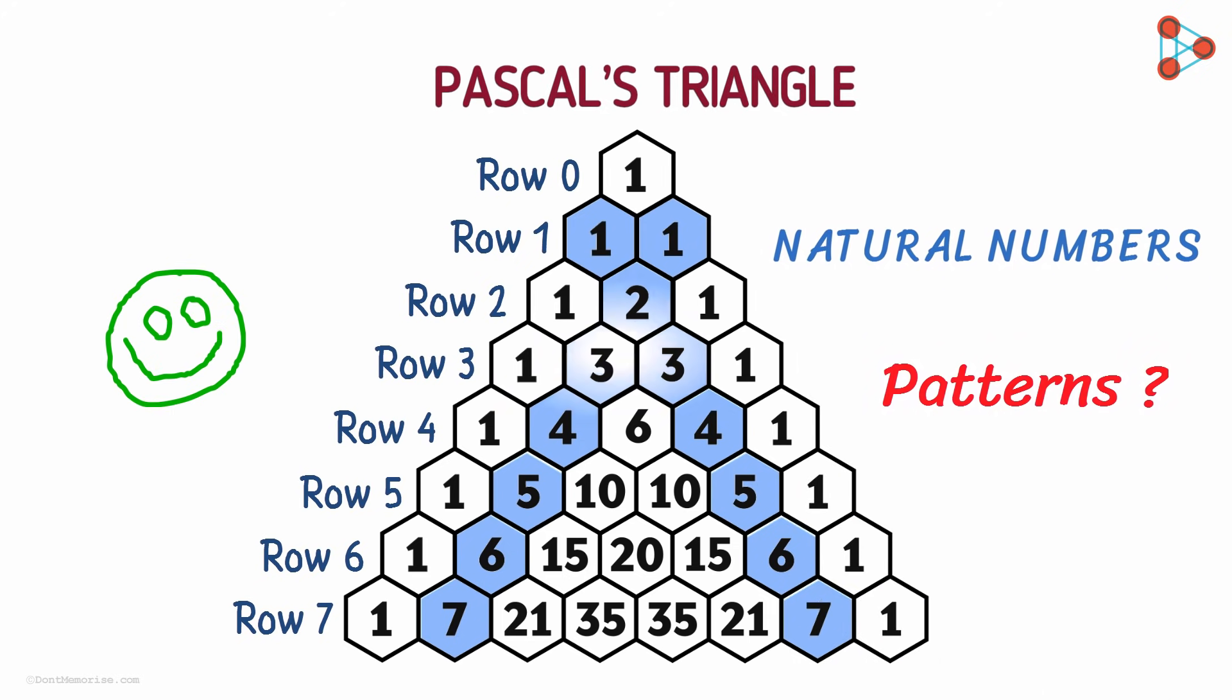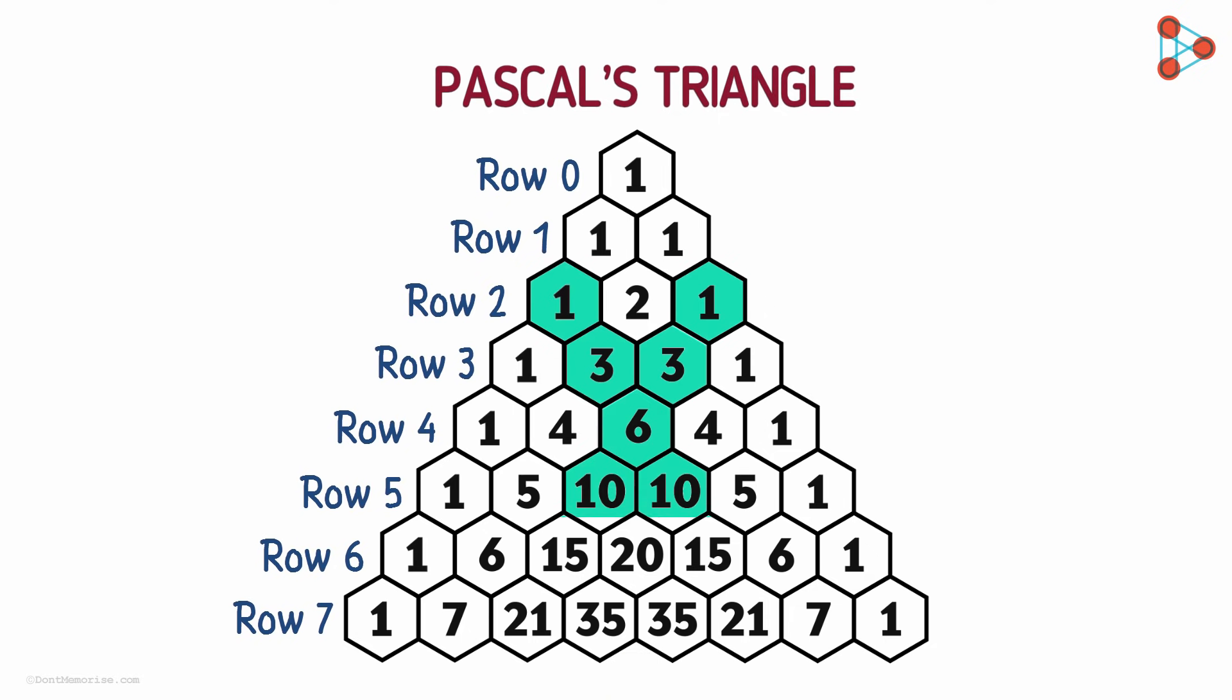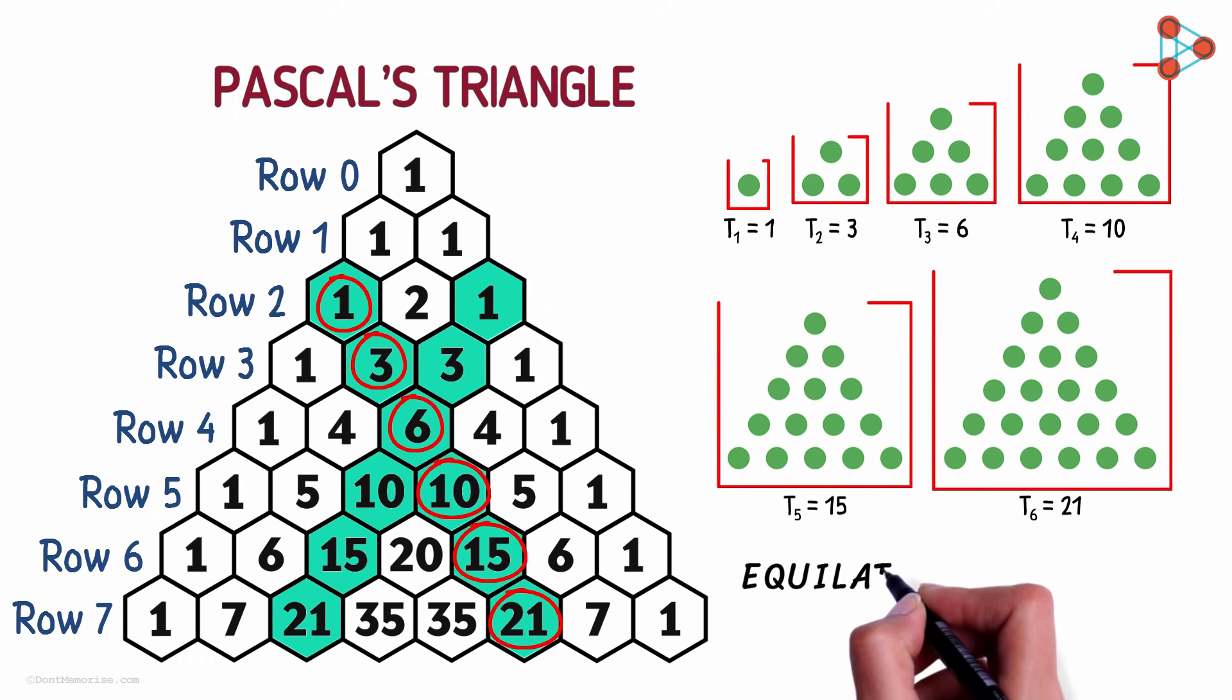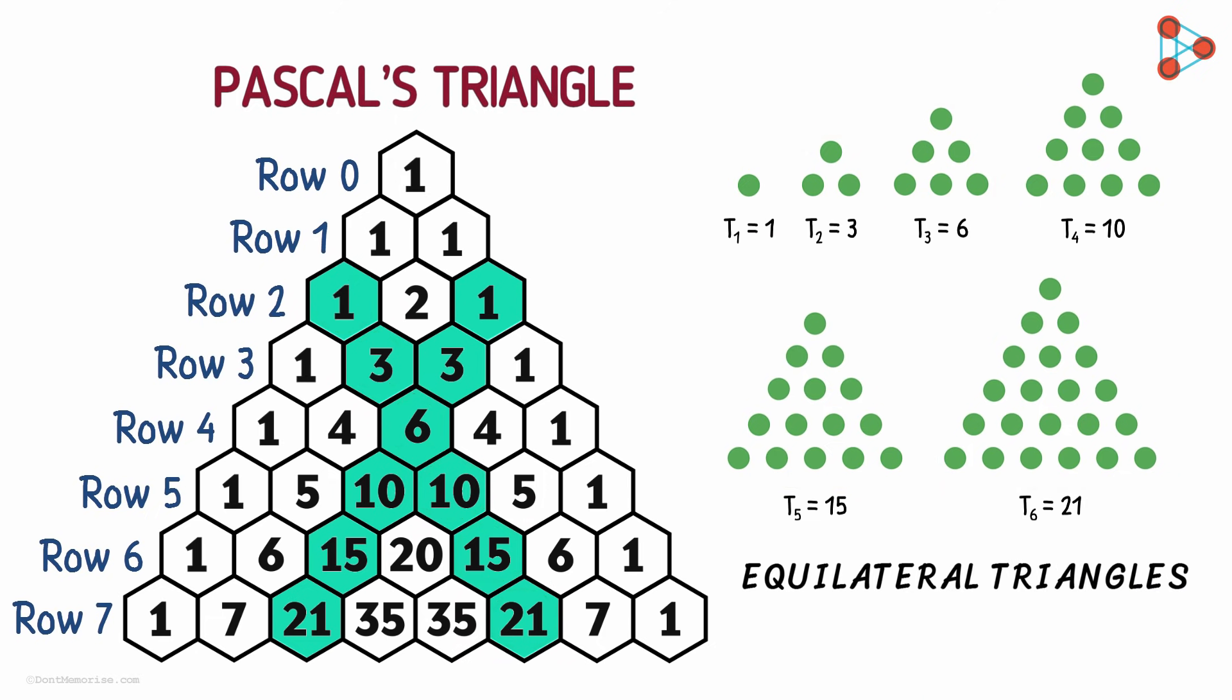Can you find more patterns here? Check out these two diagonals. What could these possibly be? The numbers are 1, 3, 6, 10, 15 and so on. For each number, let's imagine the same number of circles. Let's arrange them like this. What do you see? We see that for each number, we can form equilateral triangles. 3 can be arranged like this. 6 can be arranged like this and so on. Such a set of numbers is called as a set of triangular numbers. Interesting, right?